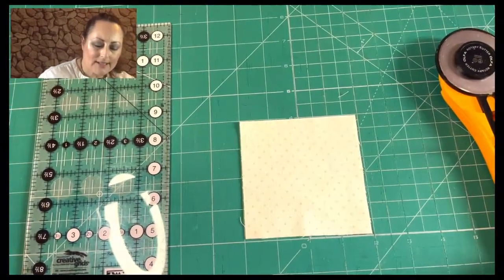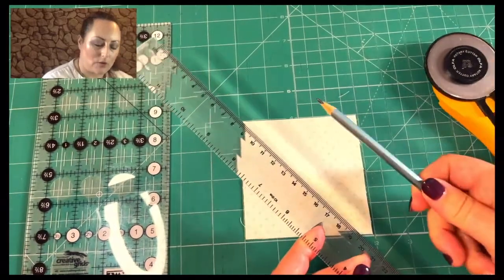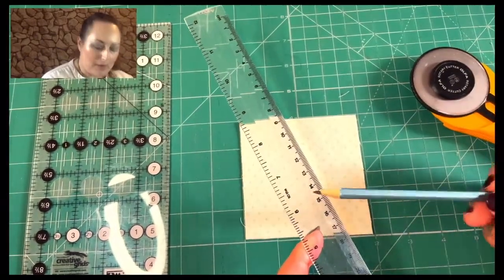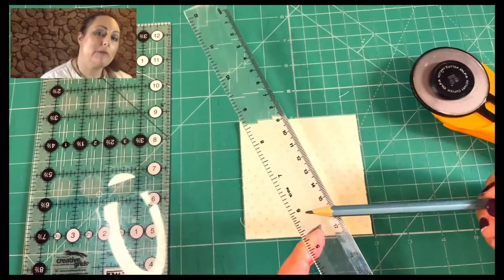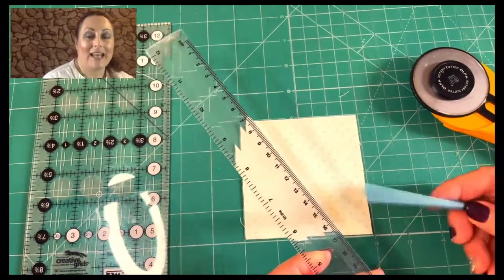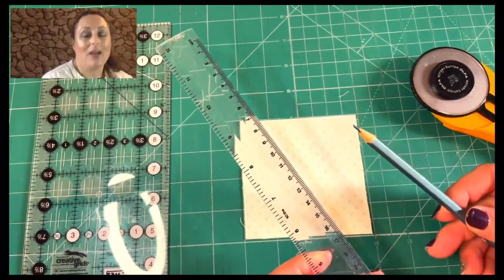Then you want to get a ruler and a pencil. Now you can use a patchwork ruler, but I find just a standard stationary ruler a lot easier. It's just thinner and it means that we can draw our line a lot more accurately.